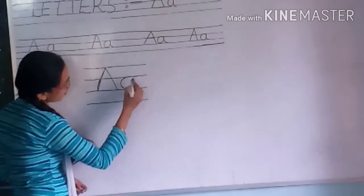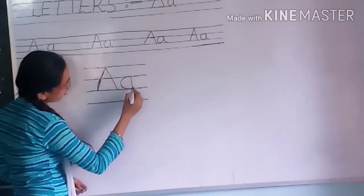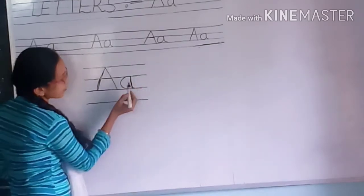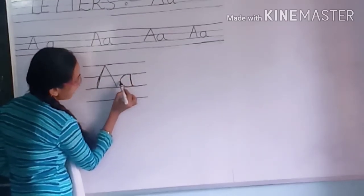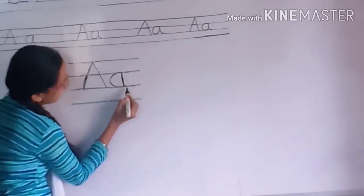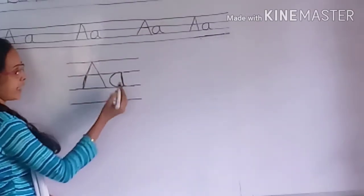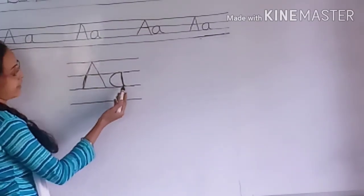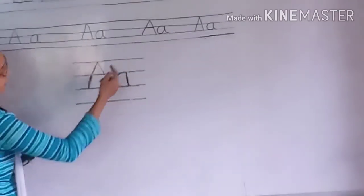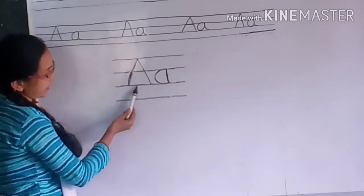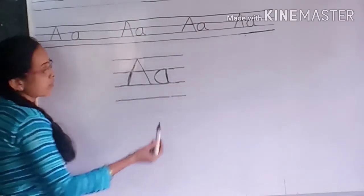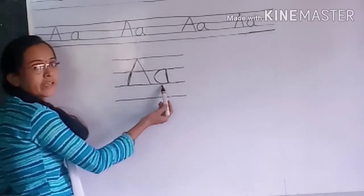This is lowercase letter A. Here first a right open curve, and I am going to draw a standing line. It will become lowercase letter A. This is uppercase letter A and this is lowercase letter A. We use only three lines for writing uppercase letter A.